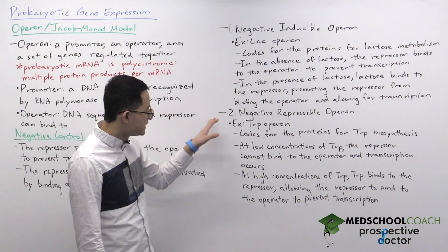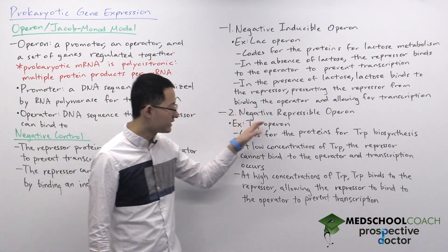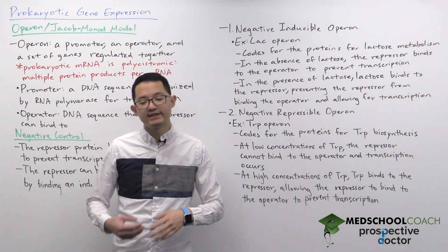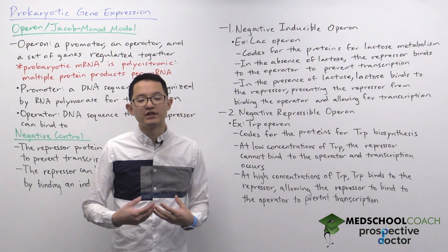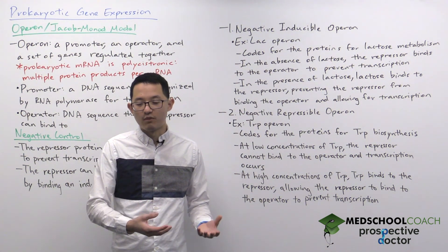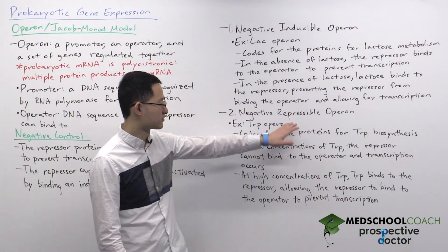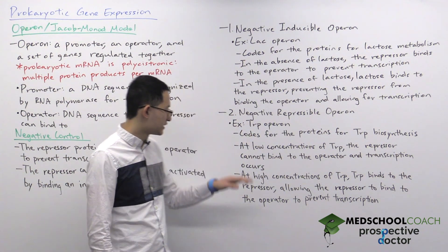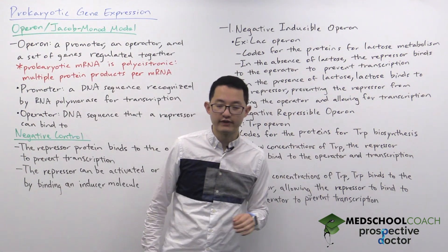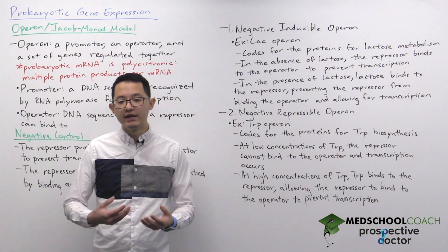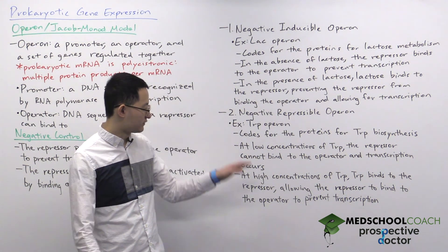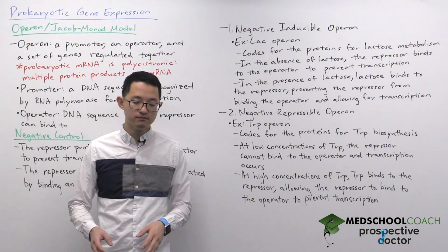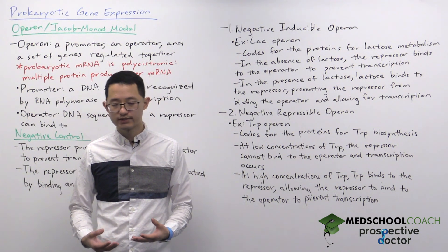Now let's look at a negative repressible operon. Negative means it involves a repressor that can inhibit transcription, but repressible means this is an operon whose activity is usually on and can be repressed. A good example is the trp operon, which you also want to be familiar with for the MCAT. The trp operon encodes the proteins for tryptophan biosynthesis — making tryptophan involves multiple enzymes, so prokaryotes produce a single mRNA expressing all the proteins needed for tryptophan synthesis.